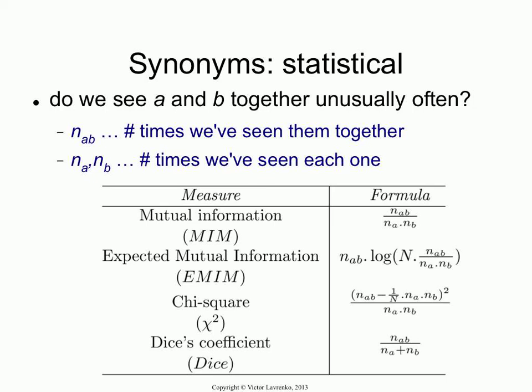So how could you figure out if two terms are statistical synonyms of each other? Statistical synonym is not really the same as a synonym. Co-occurrence doesn't mean synonymy in the linguistic sense, but it is incredibly useful — arguably more useful than synonymy in the strict sense of the word.